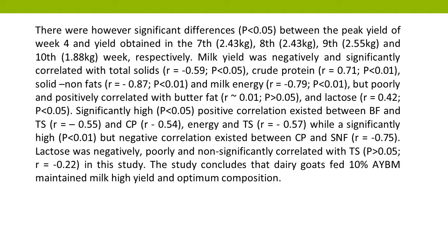There were significant differences (p<0.05) between the peak yield of week 3 and yields obtained in the 7th (2.43 kg), 8th (2.43 kg), 9th (2.55 kg), and 10th (1.88 kg) weeks respectively. Milk yield was negatively and significantly correlated with total solids (r = -0.59, p<0.05), crude protein (r = -0.71, p<0.01), solid non-fats (r = -0.87, p<0.01), and milk energy (r = -0.79, p<0.01), but poorly and positively correlated with butter fat (r = 0.01, p<0.05) and lactose (r = 0.42, p<0.05).